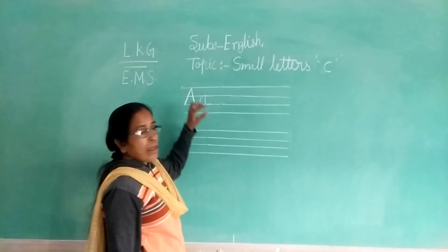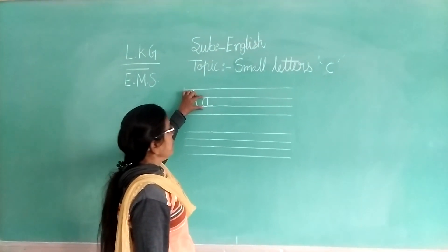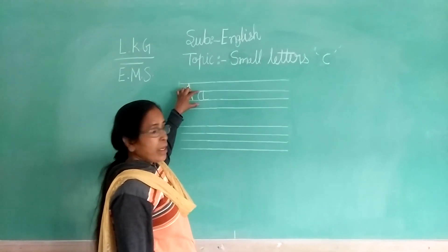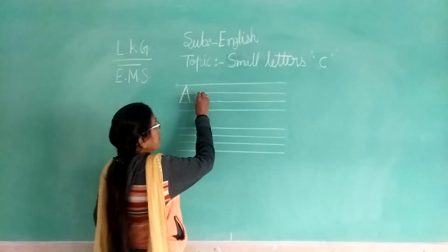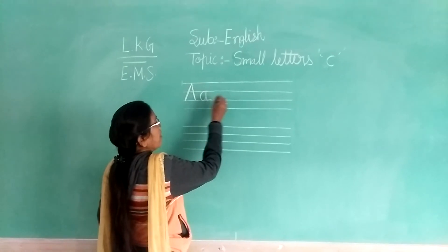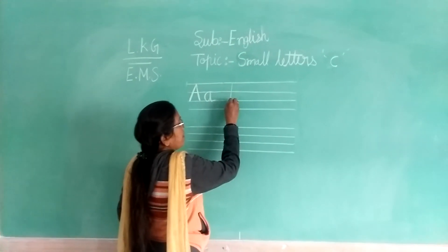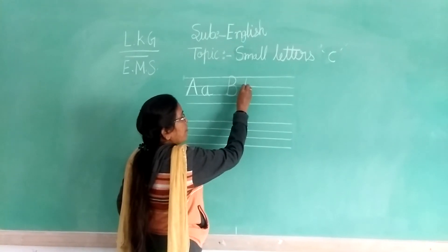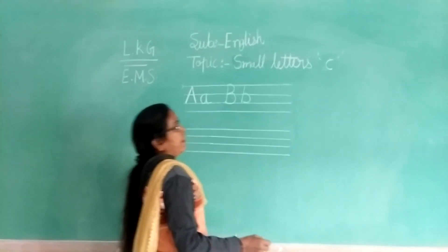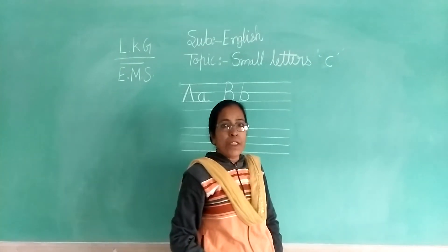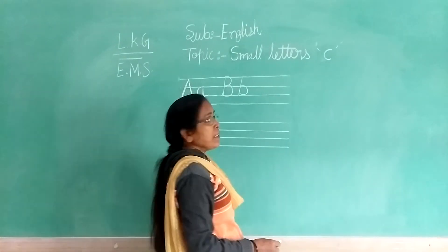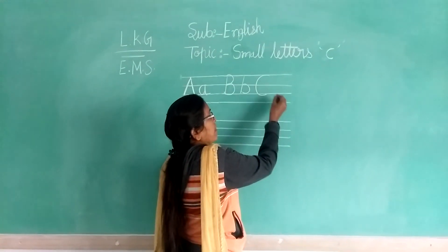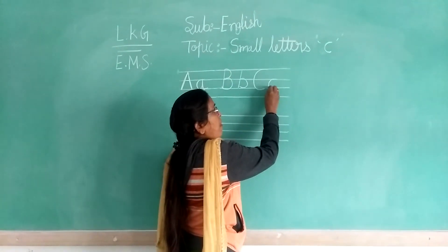And small a — write in between the blue line and red line. Okay? Small a. Capital B. Small b. And today I teach you C. So, you already learnt C.